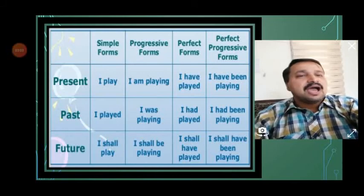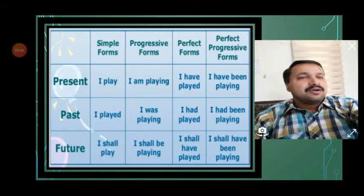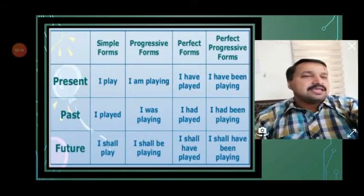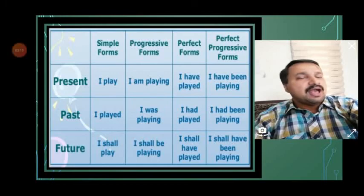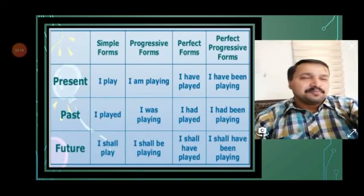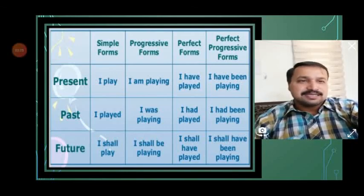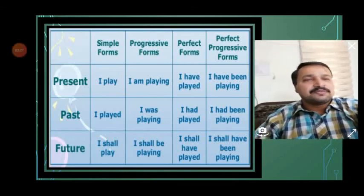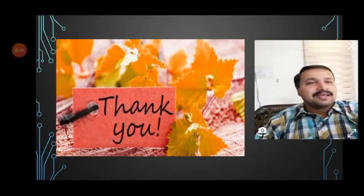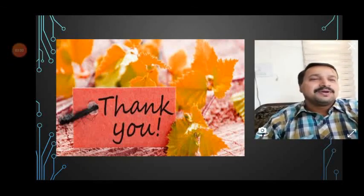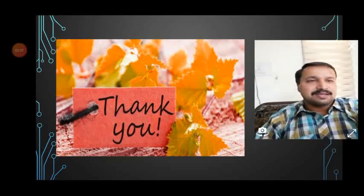In future perfect progressive or future perfect continuous tense: I shall have been playing, we shall have been playing. For 'he': he will have been playing, she will have been playing, they will have been playing, you will have been playing. These are the forms and examples of all the tenses. Thank you for watching. Please share, like and subscribe to our channel. Thank you, and have a nice day.